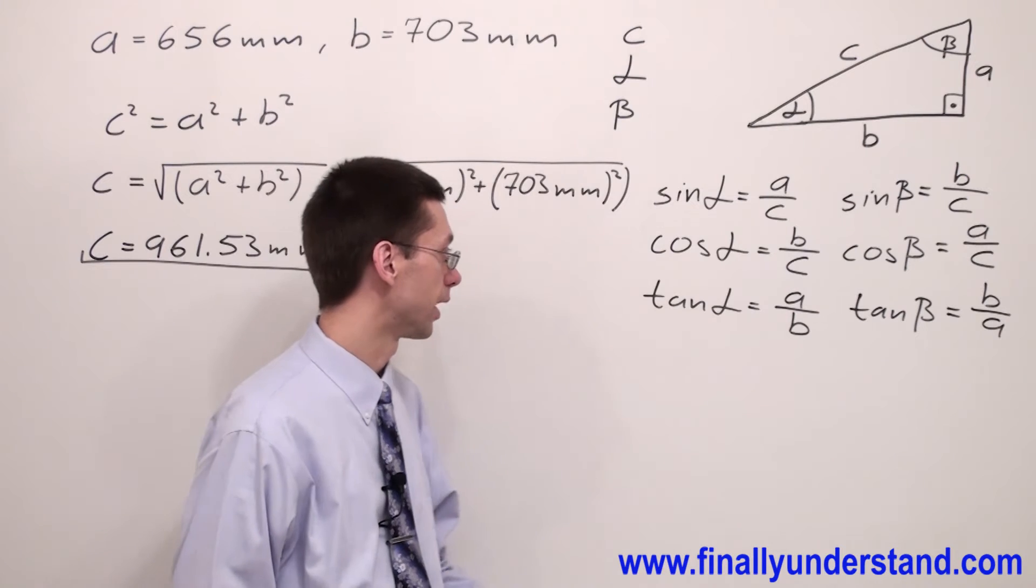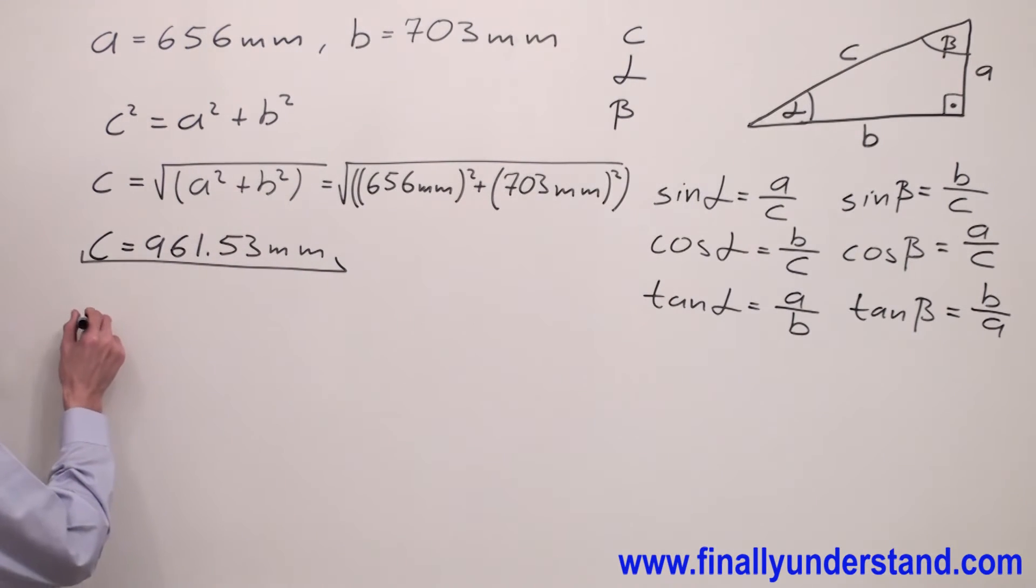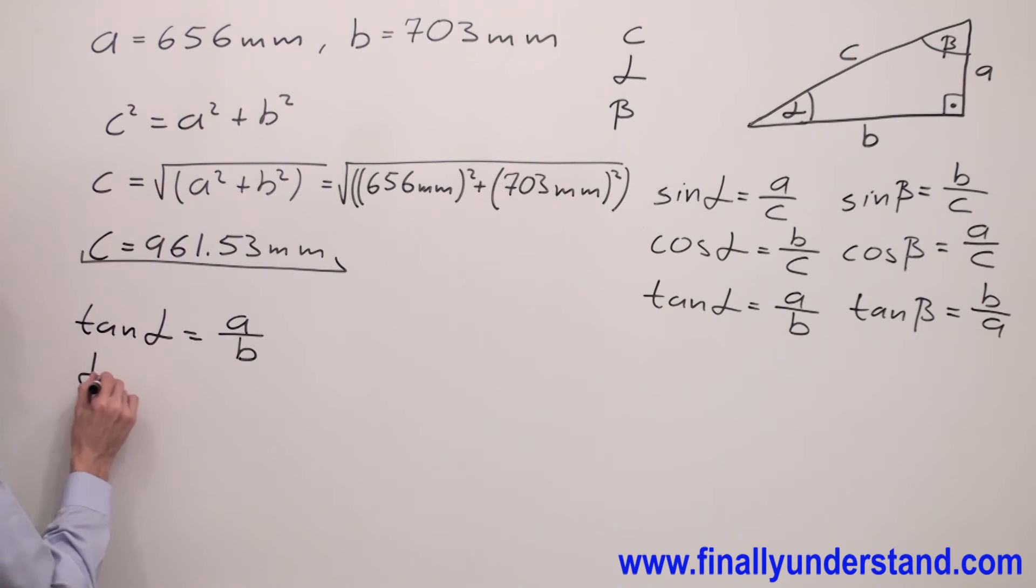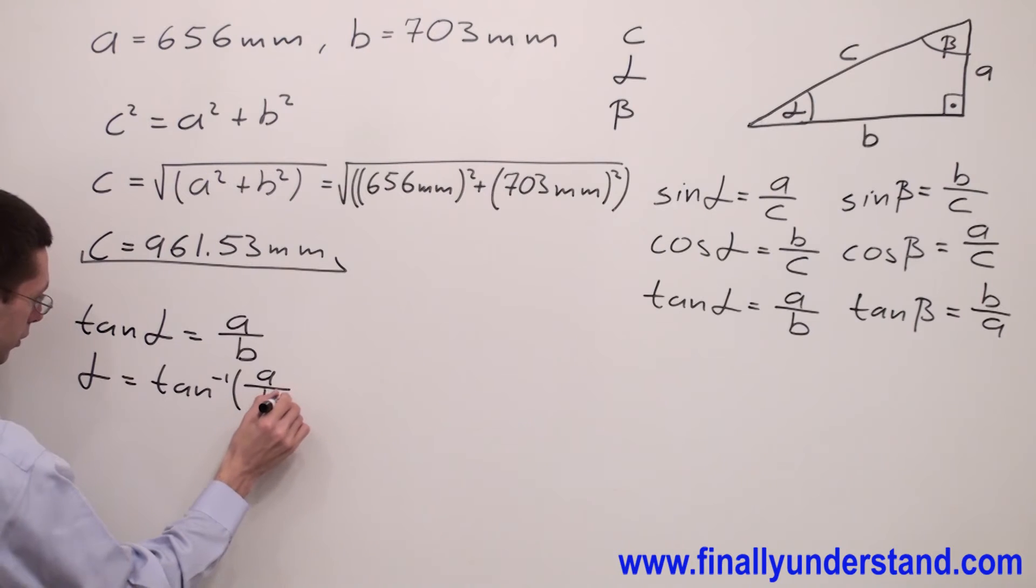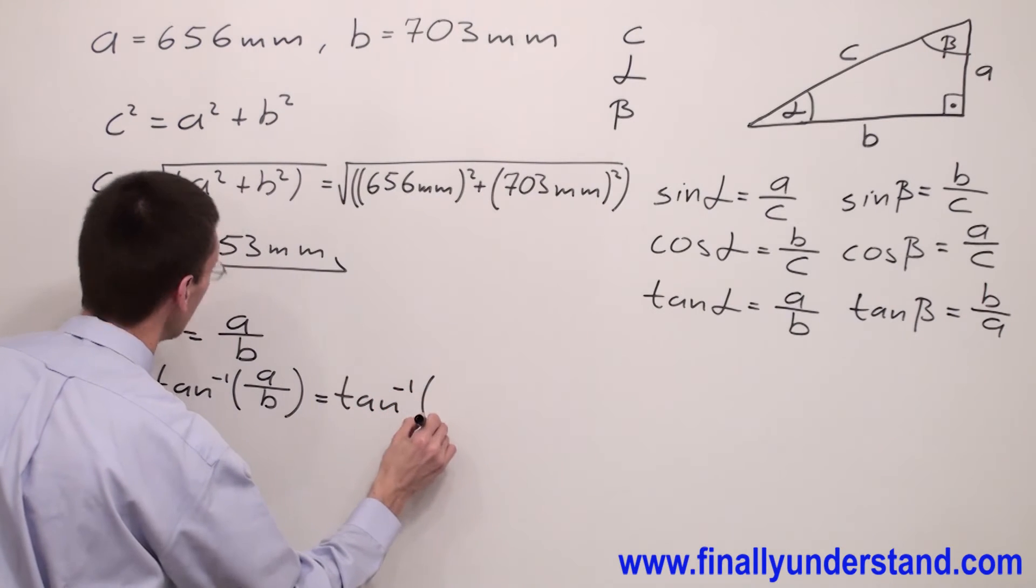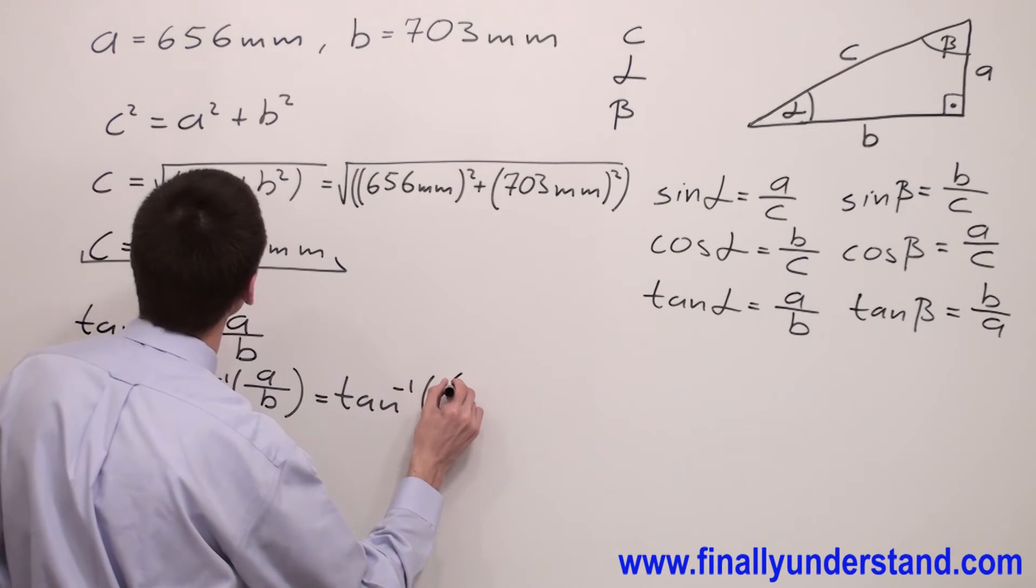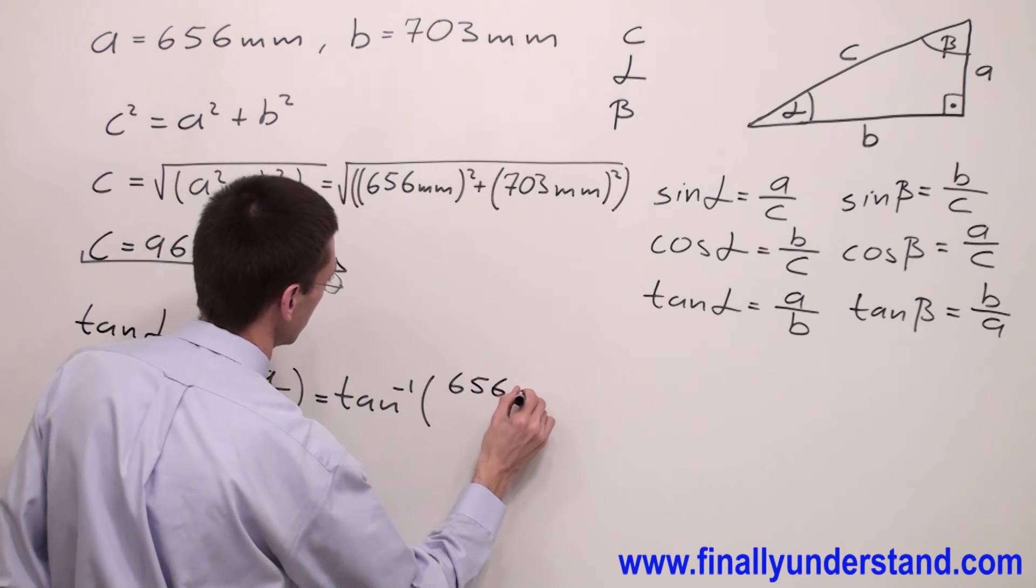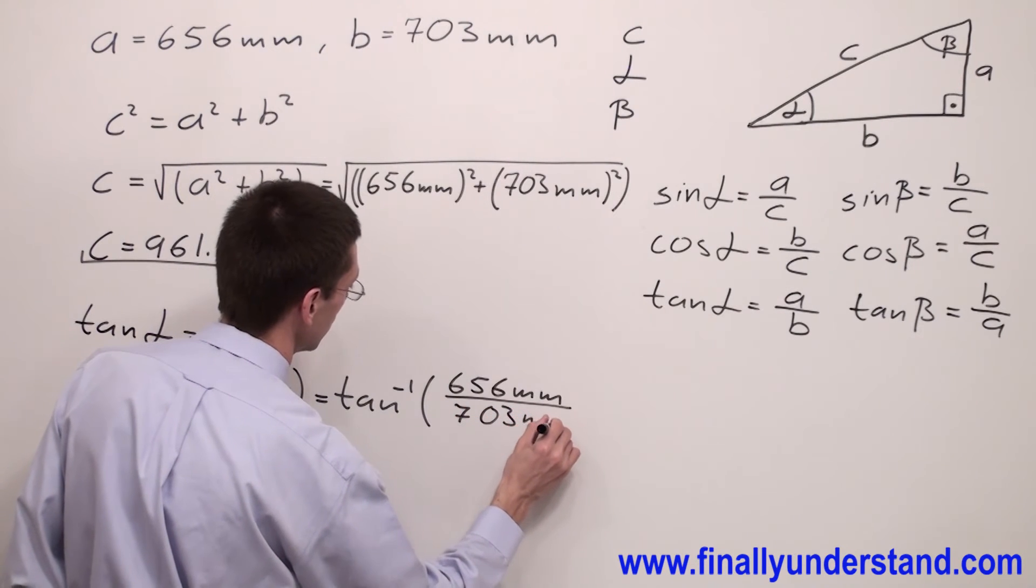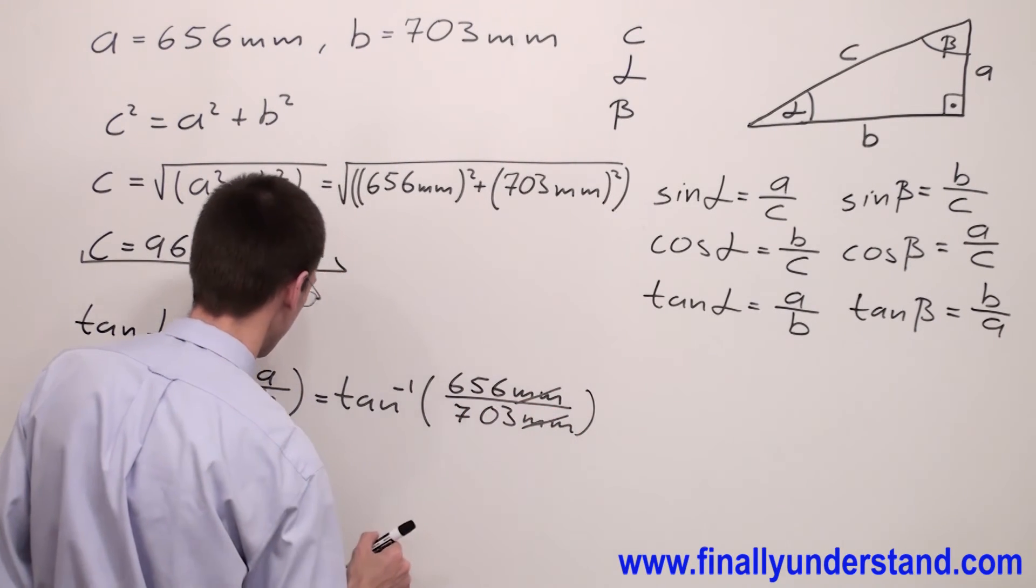So I'm choosing tangent alpha. I have tan(α) = a/b. In order to find angle alpha, I'm supposed to find inverse tangent of a/b, which equals inverse tangent of 656 millimeters over 703 millimeters. Millimeters will cancel out.